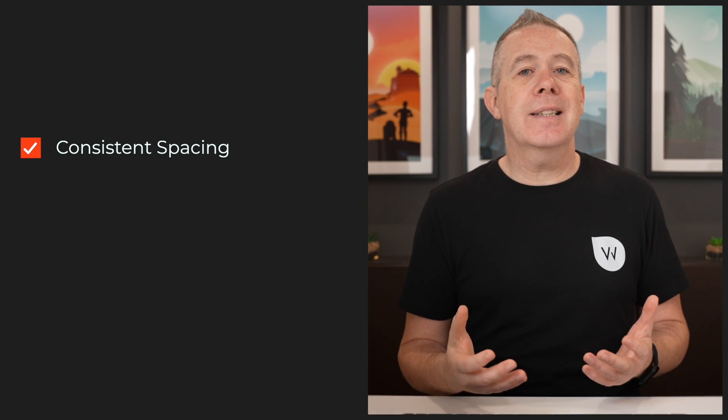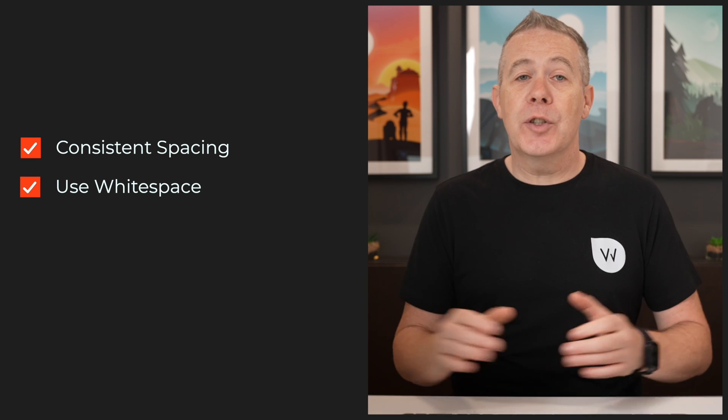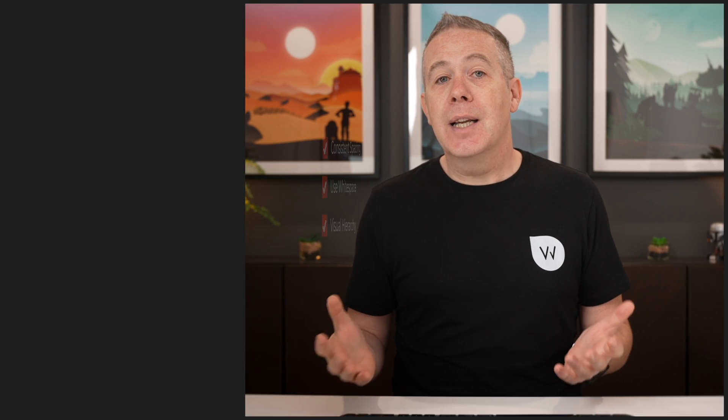Those three key principles are consistency of spacing and layout, white space, and visual hierarchy. They don't sound particularly exciting, but when you combine them together and understand them, they can make a massive difference to the designs you create. So let's take a look at a couple of examples, demonstrate what's wrong with them, and then how easy it is to correct them using these simple key principles.